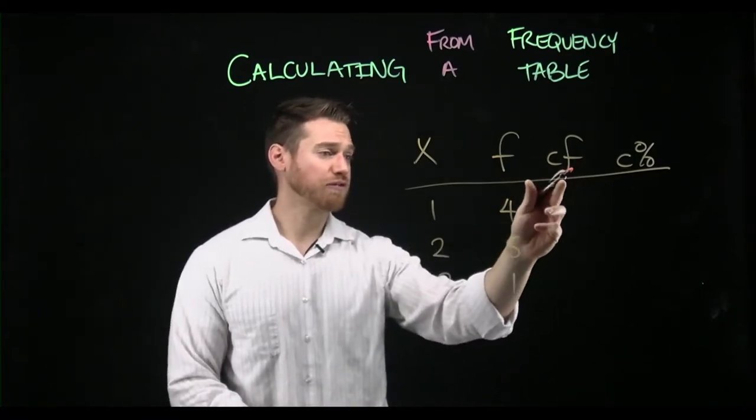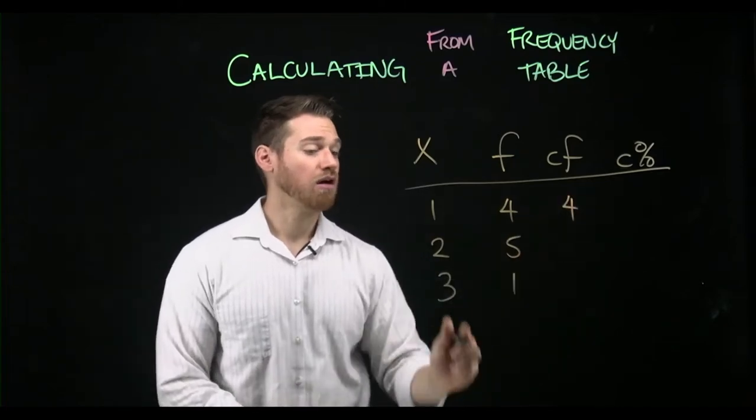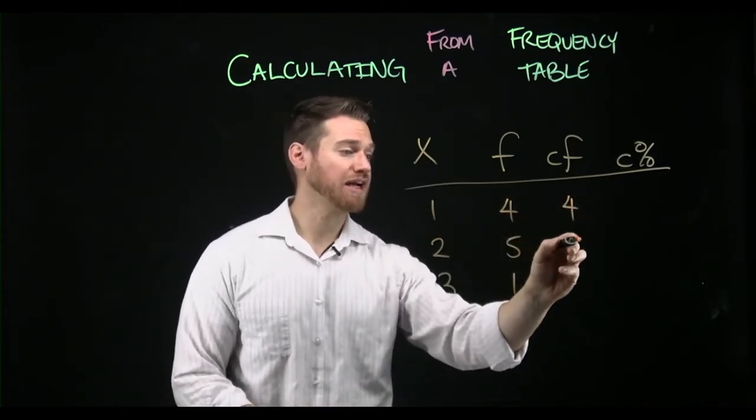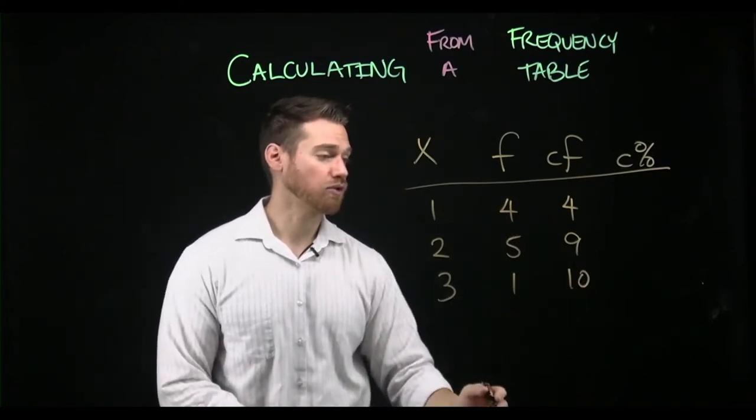So the cumulative frequency is how many scores up to this point. So when we're at one, there's only four. When we get to two, we take four plus five, we now have nine of our scores. When we get to three, we add one more, we now have all 10 of our scores.